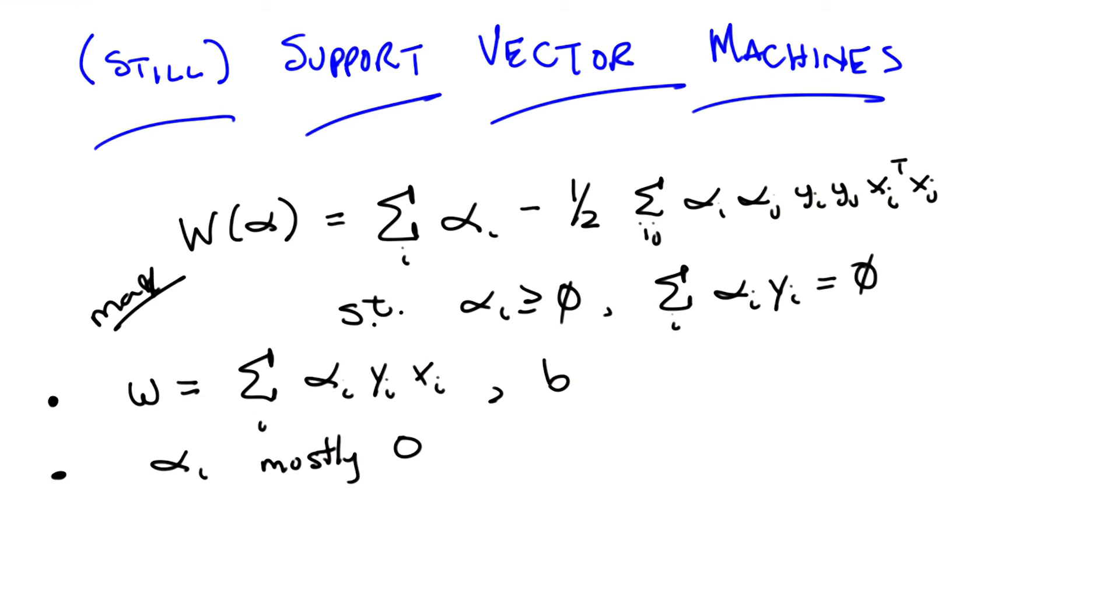So it turns out each of those data points are vectors, but you can find all of the support that you need for finding the optimal w in just using a few of those vectors. The non-zero alphas. Yeah, well the ones with non-zero alphas. So you've basically built a machine that only needs a few support vectors.